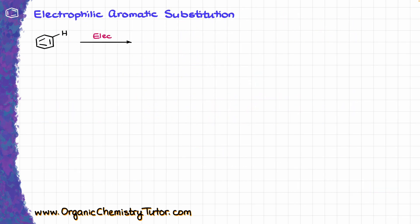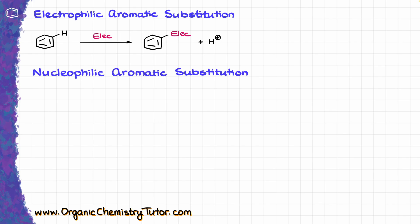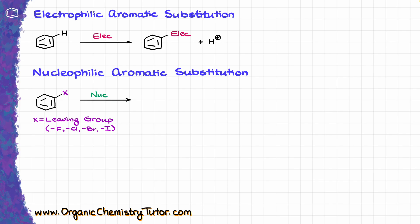When it comes to electrophilic aromatic substitution, we take the hydrogen from our molecule and replace it with some sort of an electrophile. On the contrary, when it comes to nucleophilic aromatic substitution, we need an aromatic molecule with some sort of a leaving group — typically a halide like fluorine, chlorine, bromine, or iodine. We will be using fluorine as a leaving group, but we'll talk about that in a bit. We take this molecule and treat it with a nucleophile, and as a result we replace that leaving group with whatever nucleophile we're dealing with.